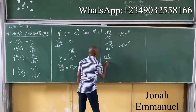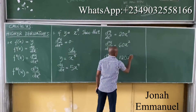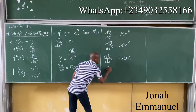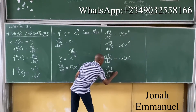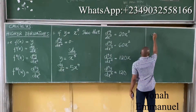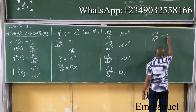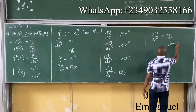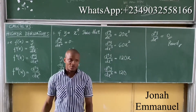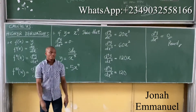The fourth derivative, d⁴y over dx⁴, is equal to 120x. The fifth derivative, d⁵y over dx⁵, is equal to 120. Finally, the sixth derivative, d⁶y over dx⁶: differentiating a constant gives zero. So that's how you work on this kind of function — you just keep differentiating until all your x terms disappear.